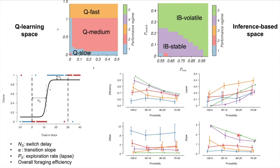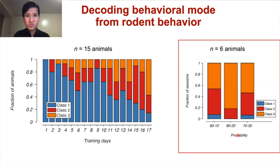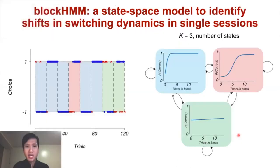Fitting these models to mouse behavior, we found that the average behavior is largely model-free, with increasing learning rates with training. The behavior of the subset of animals trained in probabilistic environments was also model-free. This was unexpected given how well some animals perform in the task, often with single-trial switches. As I delved deeper into the data, I found that animals displayed a remarkably diverse behavior within single sessions, switching their actions rapidly in some blocks, more slowly in some, and performing randomly in others.